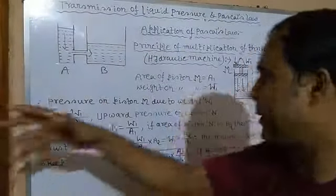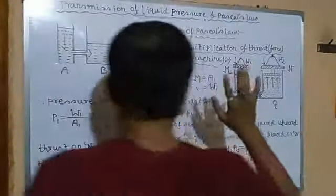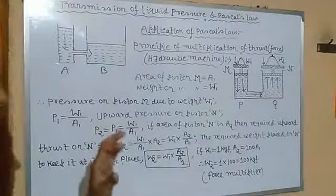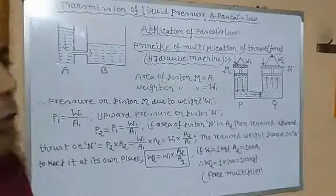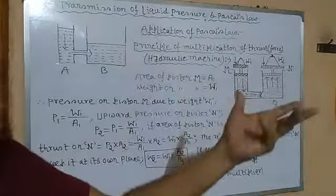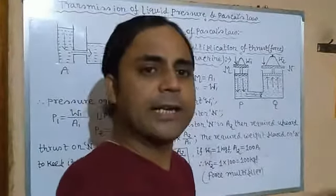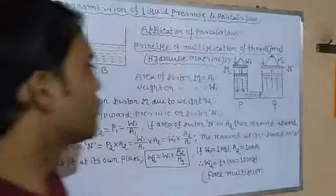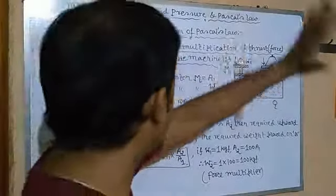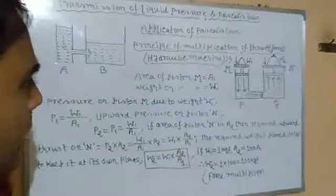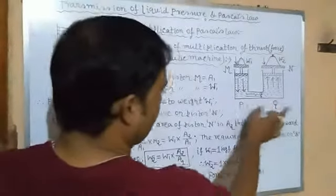Based on Pascal's Law, we will see how force is multiplied. This is called the principle of multiplication of thrust or force. By applying a small force on any small piston, we get a higher magnitude of force on the other side. By applying a small input, we can get a greater output and overcome a larger resistive force.